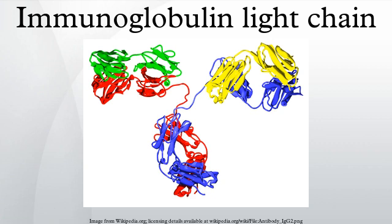If, however, one type of light chain is significantly more common than the other, the cells are likely all derived from a small clonal population, which may indicate a malignant condition such as B cell lymphoma.